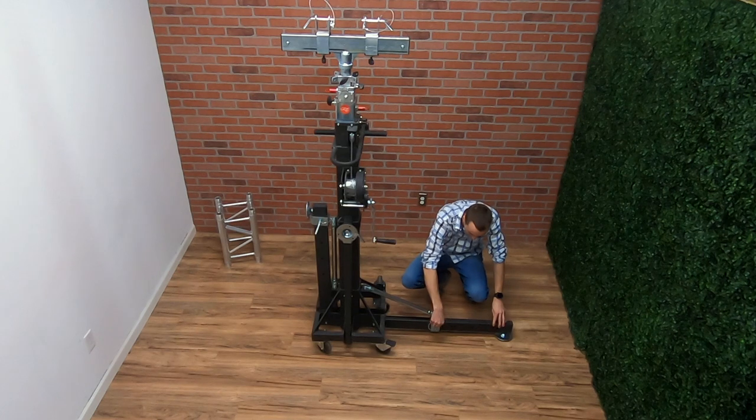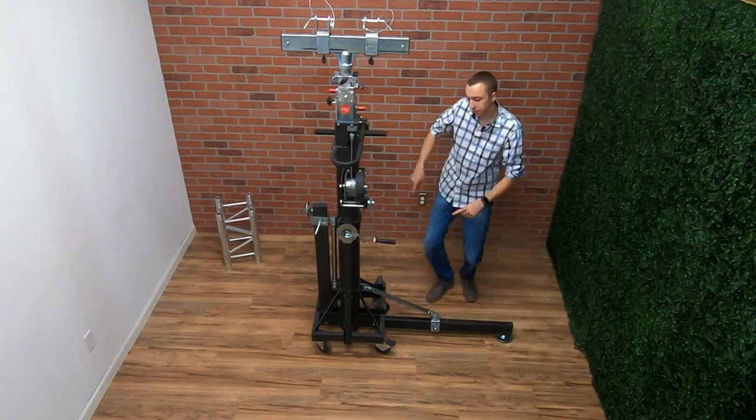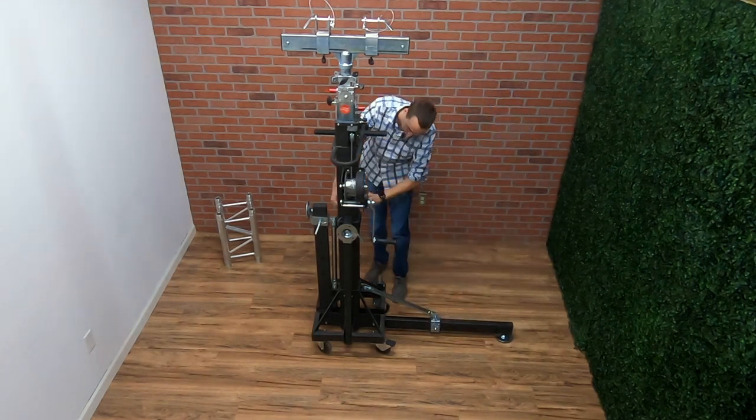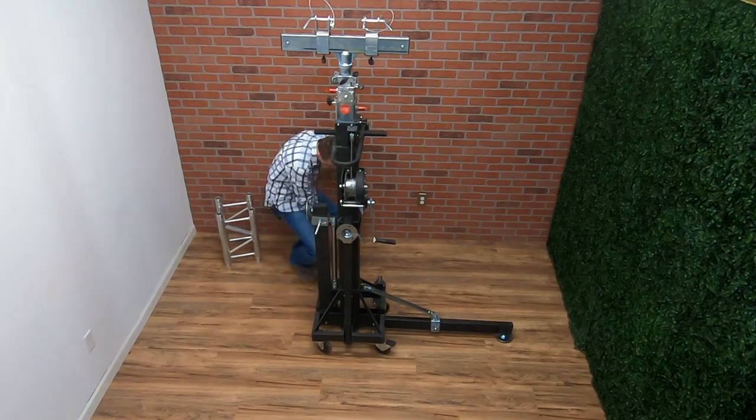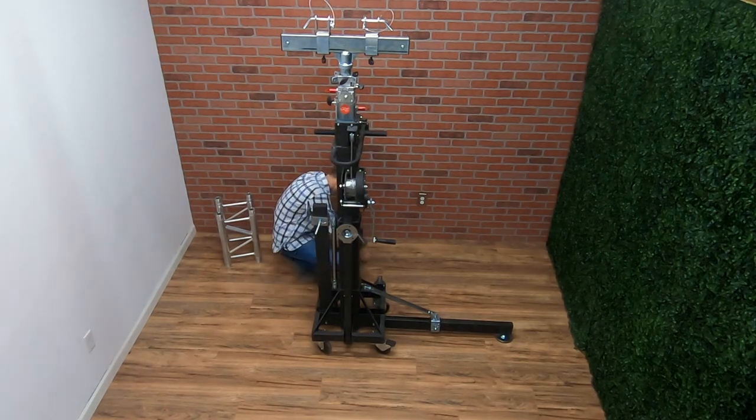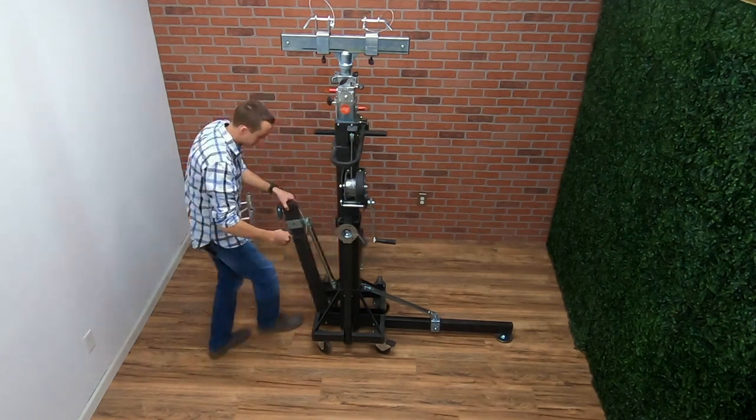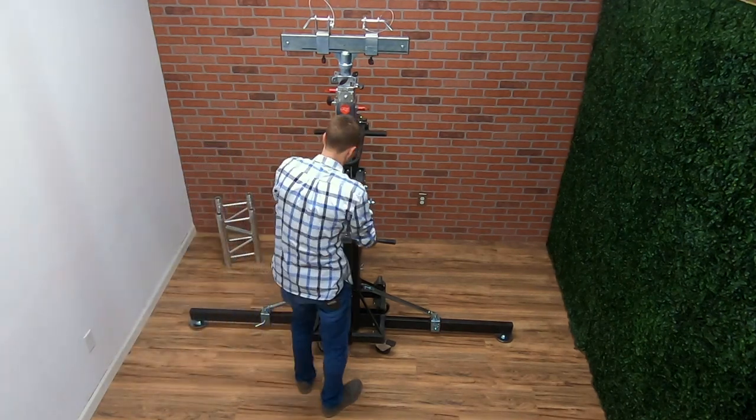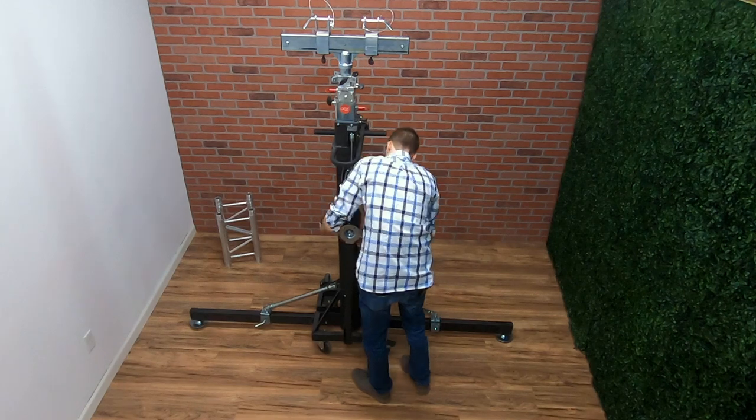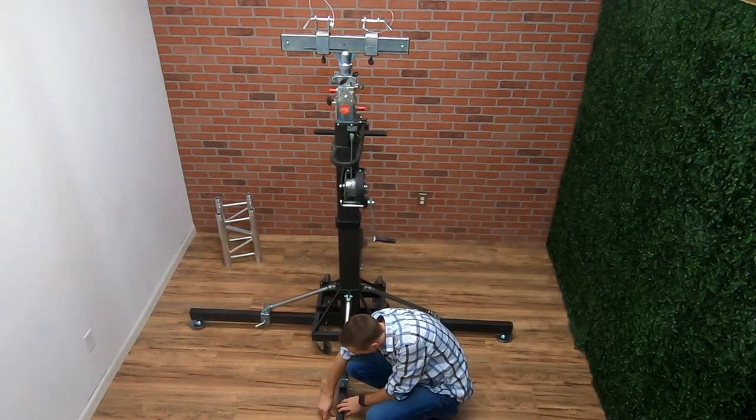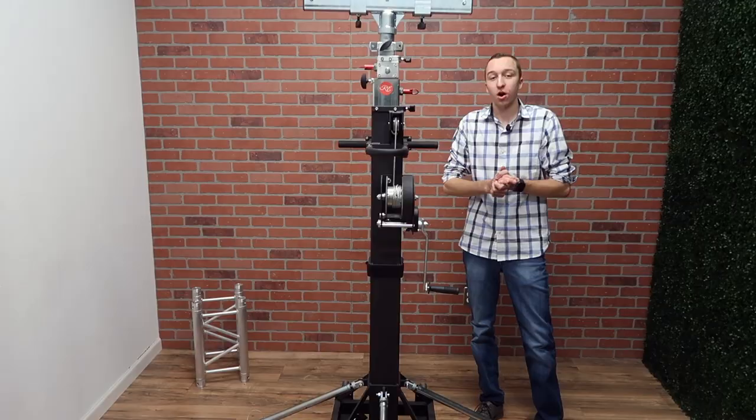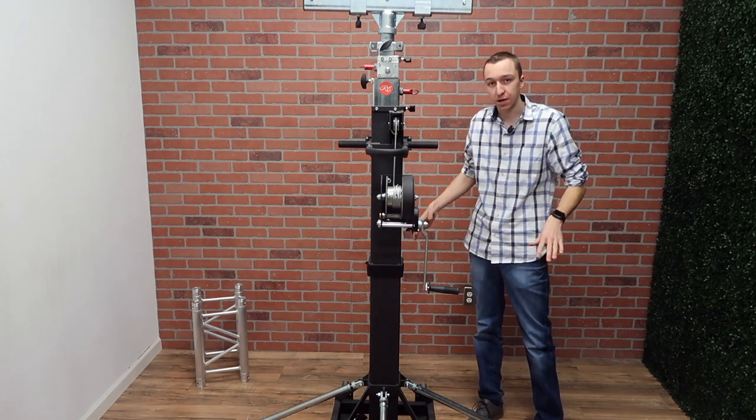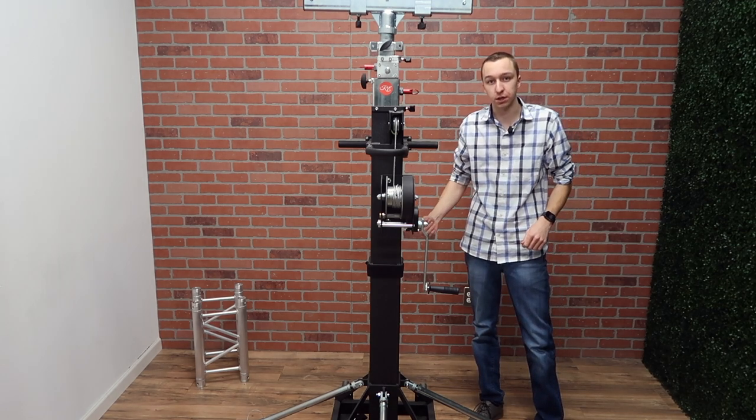Drop it in, make sure you put that cotter pin back in, and you're going to want to do the same thing to all four legs. All right, now that we have all four of the outriggers extended down and the cotter pins back into place, we can begin to lower them or increase the tension on them to lift the crank stand off the ground.